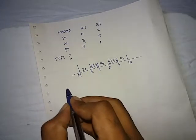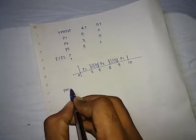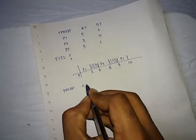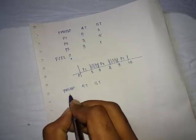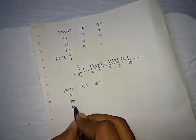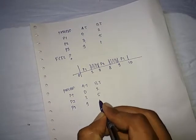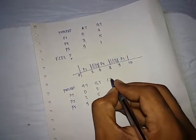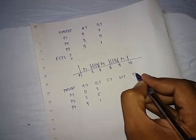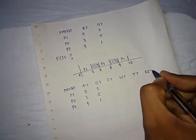If I can draw the table for this, the table becomes: Process, Arrival Time, Burst Time. P1: 0, 2. P2: 3, 5. P3: 9, 1. Next one is completion time, waiting time, turnaround time and the response time.